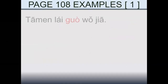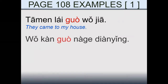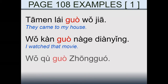Let's see some examples. 他们来过我家 — they came to my house; they had the experience of coming to my house. 我看过那个电影 — I watched that movie. 我去过中国 — I went to China.